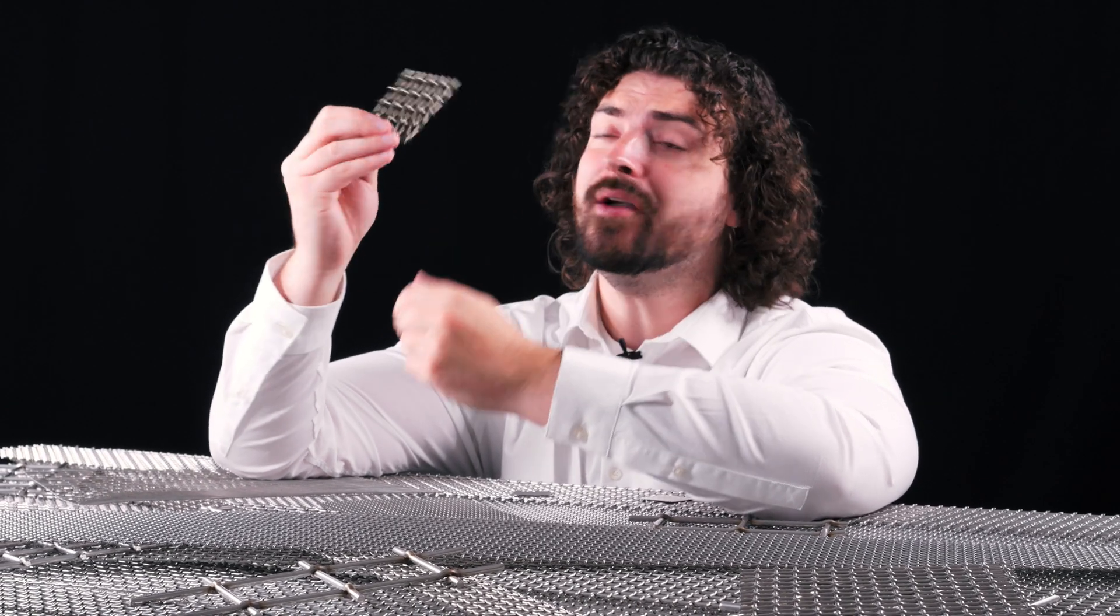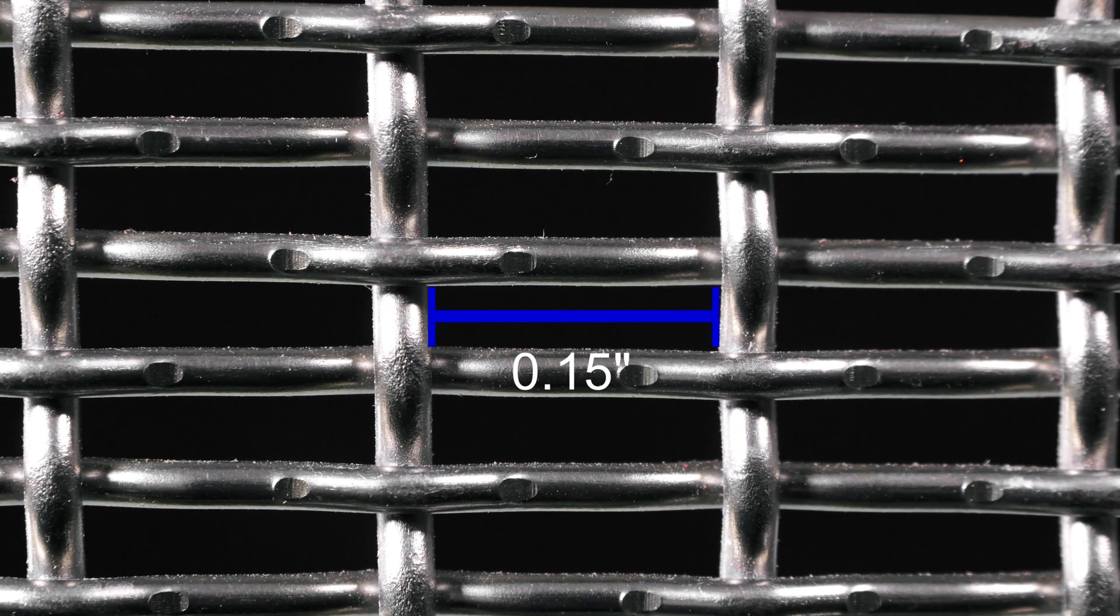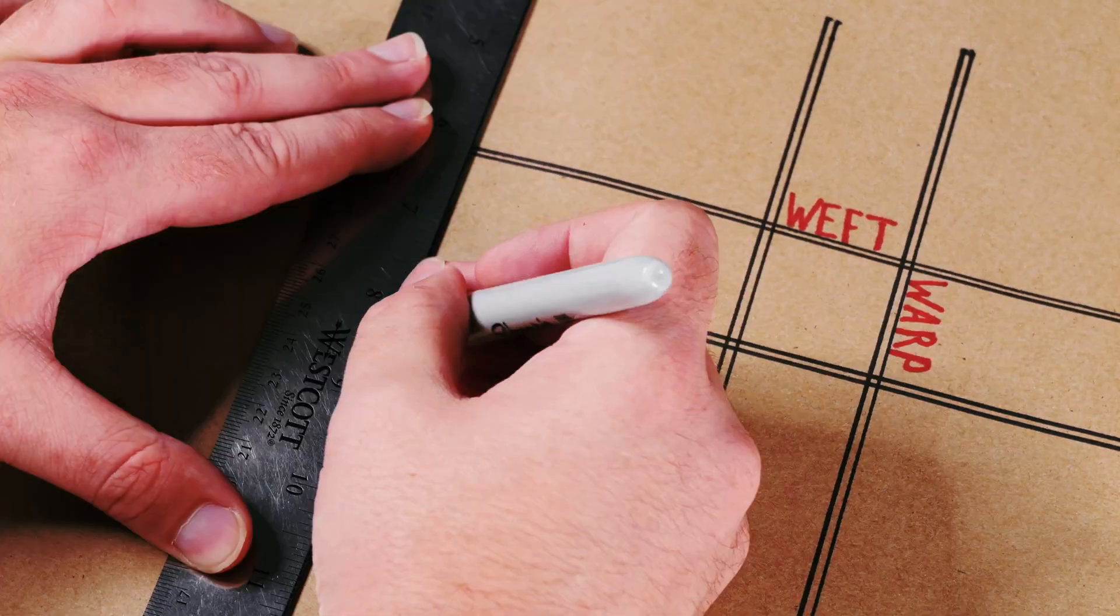And since in the first episode we covered wire diameter, I should say that if one wire diameter is bigger than the other, it actually doesn't complicate anything because the aperture is calculated always from the inside of the wires. But the shape that the aperture determines is pretty straightforward.